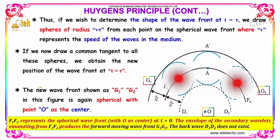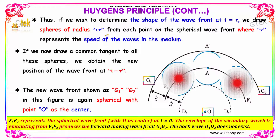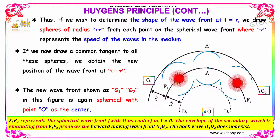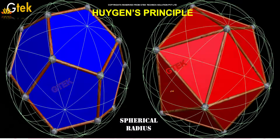If we wish to determine the shape of the wavefront at t equal to tau, we draw spheres of radius V·tau from each point on the spherical wavefront, where V represents the speed of the waves in the medium. Drawing a common tangent to all these spheres gives us the new position of the wavefront at t equal to tau. The new wavefront, shown as G1 and G2, is again spherical with point O as center.